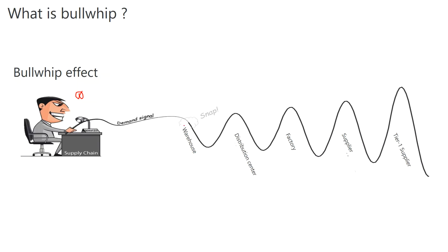What happens is that this demand signal is taken by the retailer and passed to a local warehouse. Some distortion happens — for example, the demand is 100, but the retailer wants to keep a buffer and orders maybe 120 from the warehouse. Similarly, the local warehouse passes a distorted demand signal to the distribution center, again adding a buffer based on its own calculations.